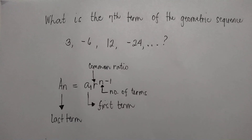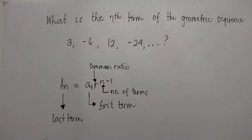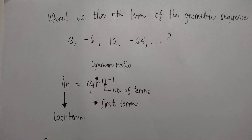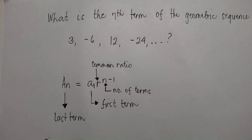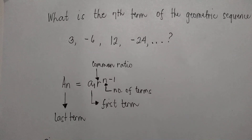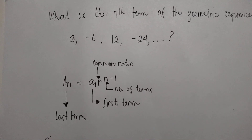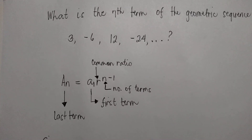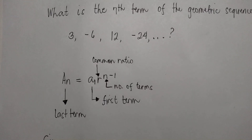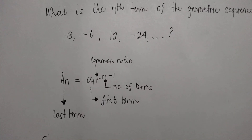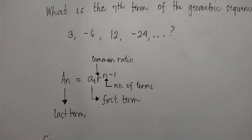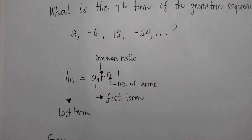Here, we are going to use the formula: a sub n equals a sub 1 times r raised to n minus 1. a sub n is the last term, a sub 1 is the first term, r is the common ratio, and n is the number of terms.